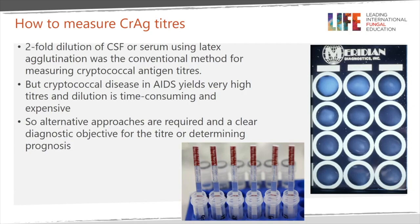On the right you can see the latex agglutination test — two-fold dilution of CSF or serum using this test has historically been the conventional method for measuring cryptococcal antigen titers, but cryptococcal disease and HIV can yield very high titers, making dilution time-consuming and expensive. The CrAg lateral flow assay is a more simple point-of-care test to detect cryptococcal antigen. Both the latex agglutination and the CrAg lateral flow assay can be quantified using titers via serial dilution. The titer is the last positive test before the dilution turns negative. Titers across the latex agglutination and lateral flow tests are not comparable.